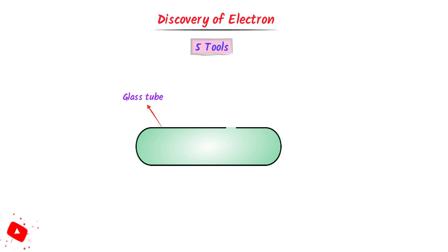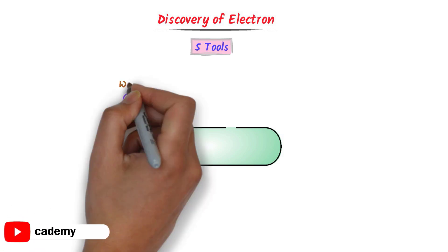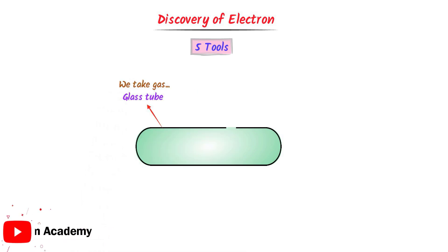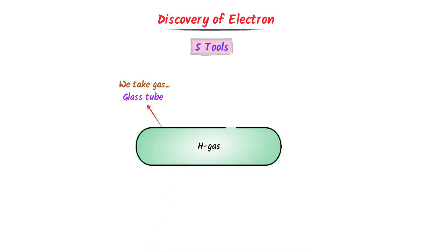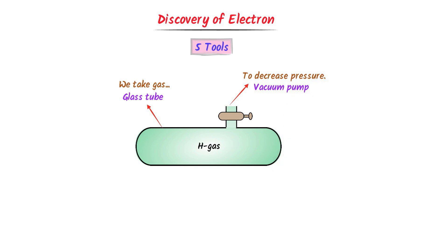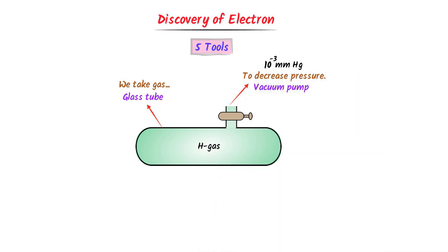The first tool is a glass tube, and we will take some sort of gas in this glass tube — for example, hydrogen gas. The second tool is a vacuum pump. We use this vacuum pump in order to decrease the gas pressure — for example, we decrease the pressure of the gas to 10 to the power negative 3 mm of Hg.